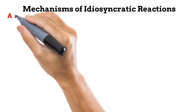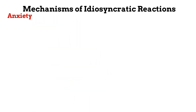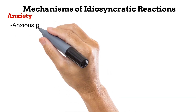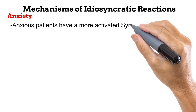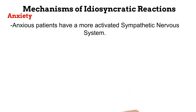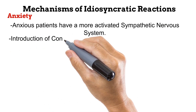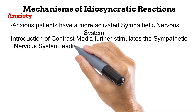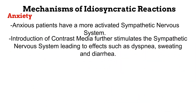There is one more way by which idiosyncratic reactions can happen — this is anxiety. An anxious patient will have a more activated sympathetic nervous system. When contrast media is introduced to such a patient, the sympathetic nervous system is further stimulated to an extent that it is overactive. Symptoms of an overactive sympathetic nervous system include dyspnea, excessive sweating, and diarrhea.